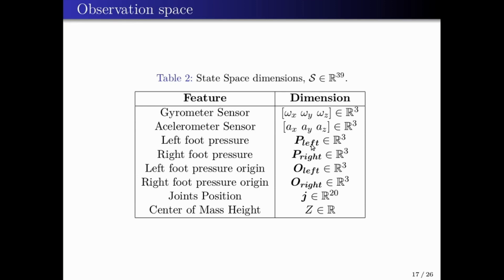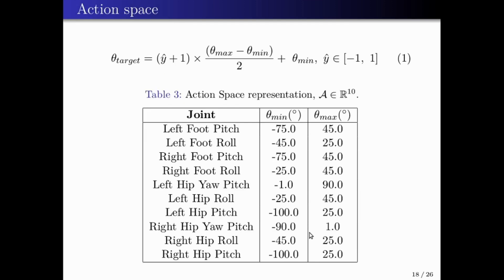The features that compose our state space are shown in table number two. In synthesis, the state space is composed by torso angular velocity and acceleration, by the foot pressure sensor data, by the joint positions, and finally by the height of the center of mass. Equation number one describes the final action. Y-hat is the raw output of the neural network, which is clipped from minus one to one. We map the value Y-hat from the range minus one to one to the range of each joint, which is represented by table number three.